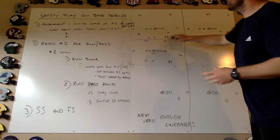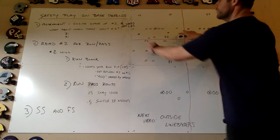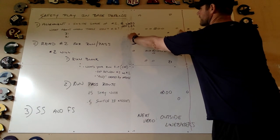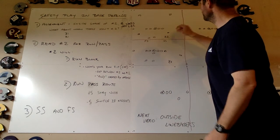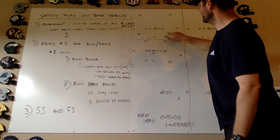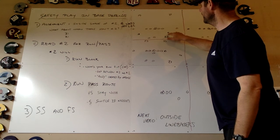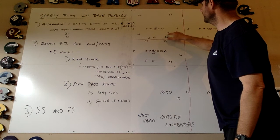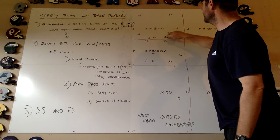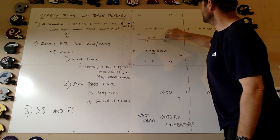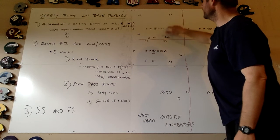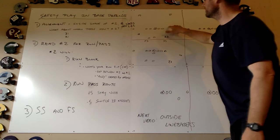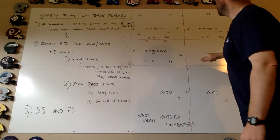Here's a couple examples. This is a 22 set where there's two receivers on each side. You would simply find the second eligible receiver in, and you would line up inside shade of that person eight yards off the line of scrimmage.